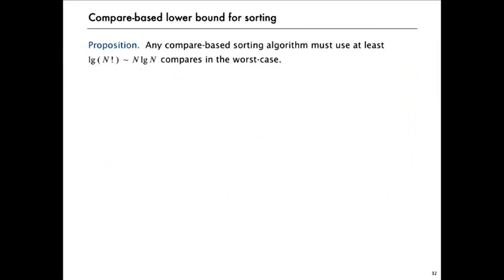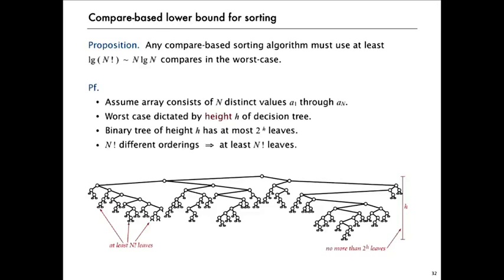So the lower bound is a proposition that uses a decision tree like that to prove that any compare-based sorting algorithm has to use at least log base 2 of N factorial compares in the worst case. And by Sterling's approximation, we know that log base 2 of N factorial is proportional to N log base 2 N. And then the proof generalizes what I talked about in the decision tree on the last slide.